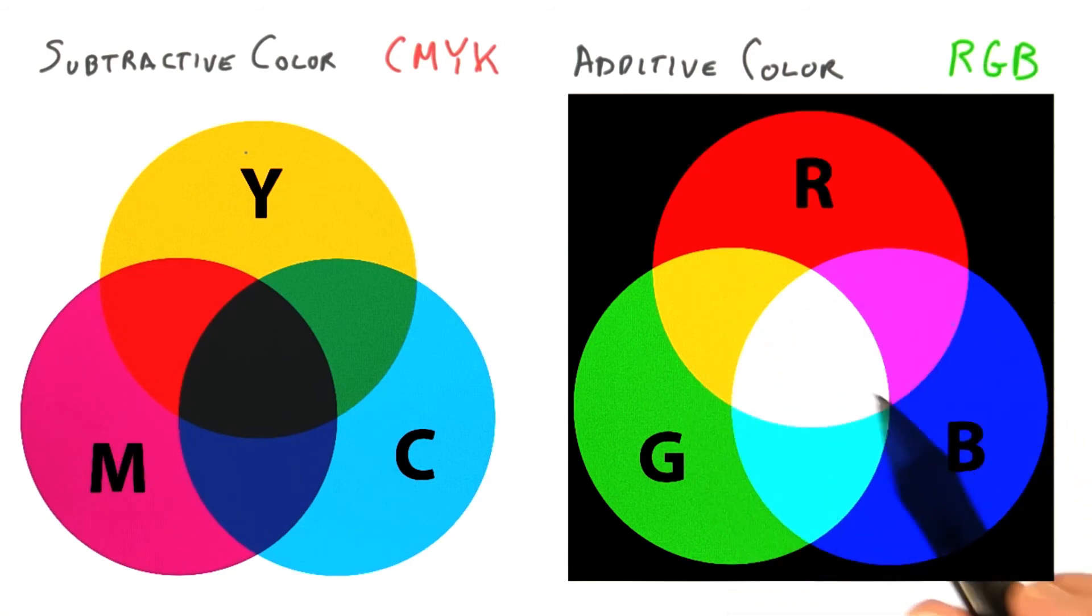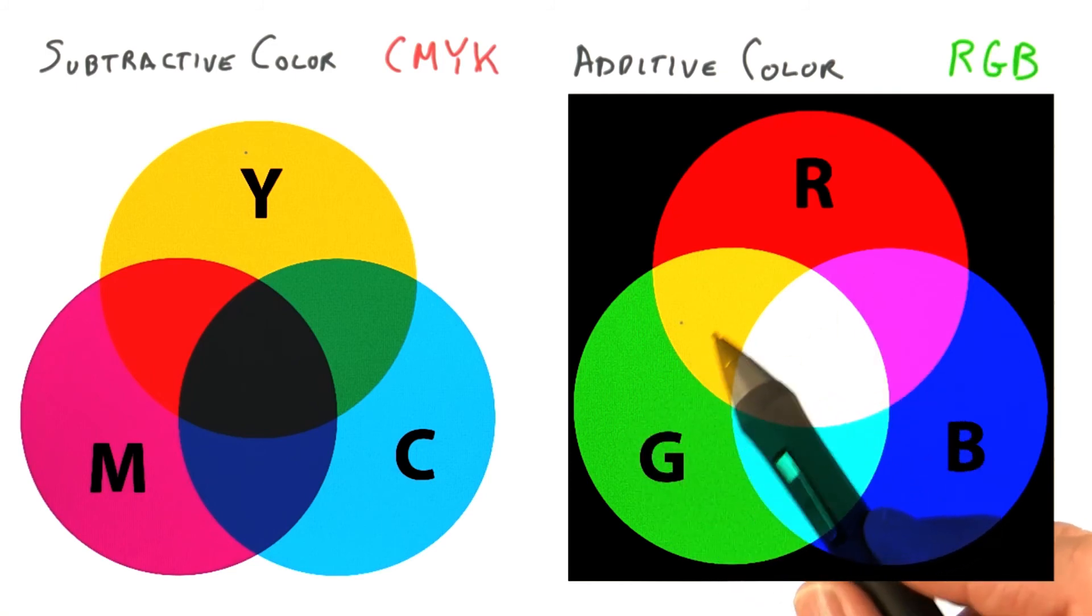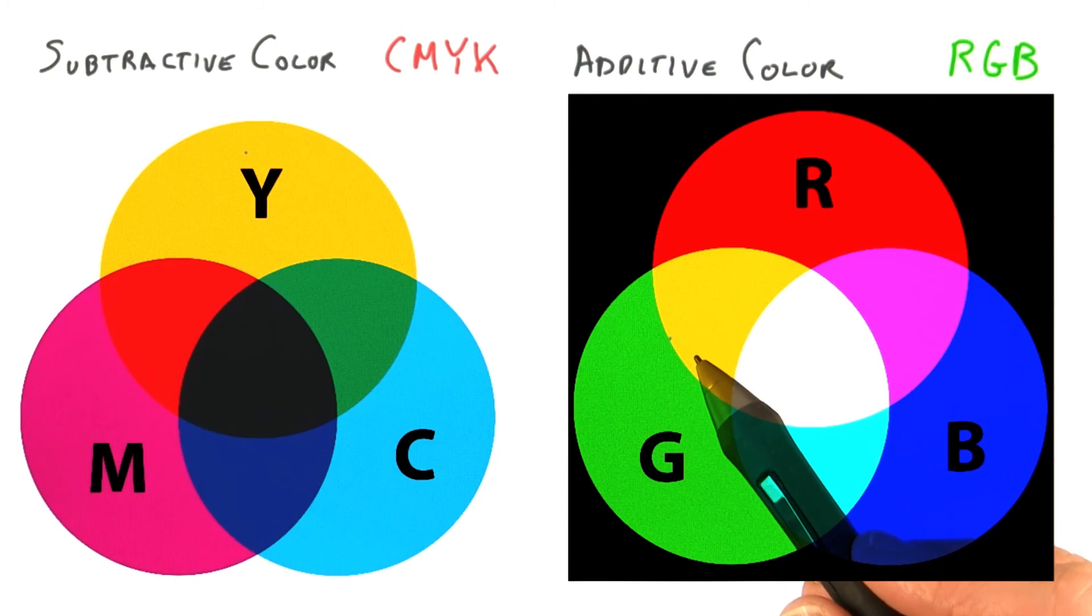If we specify some red and some green light, then these contributions are added together, giving a brighter color overall. This color model is called additive color.